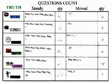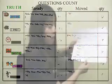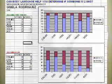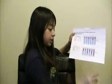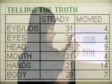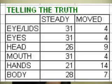I'm going over my experimental results. Here I took my tally sheet and I transferred all of this data onto my graph. As you can see here, I put the numbers in from my tally sheet. I have the eyelids, the eyes, the head, the mouth, the hands, and the body.